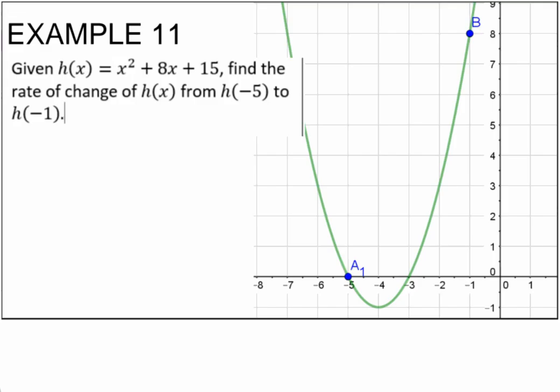So to do that, we take a look at our graph. We go to negative 5 on the x-axis, that's right there, and then to negative 1 and then up to our line up here.